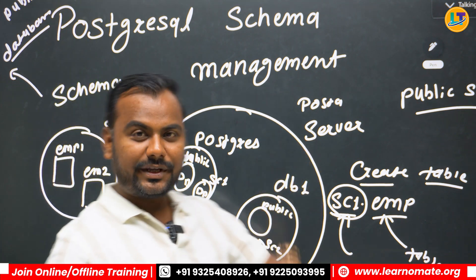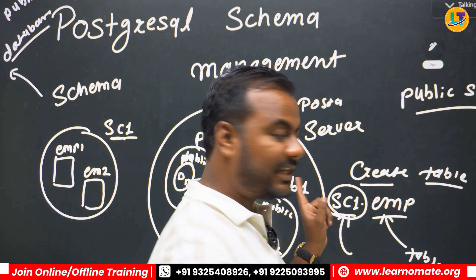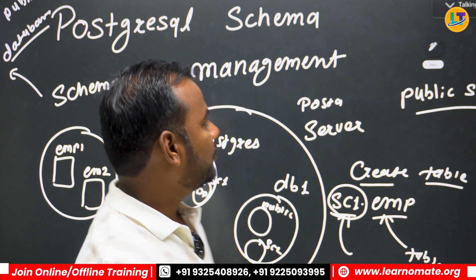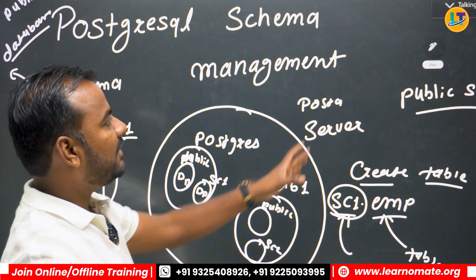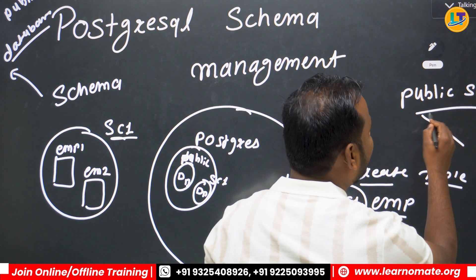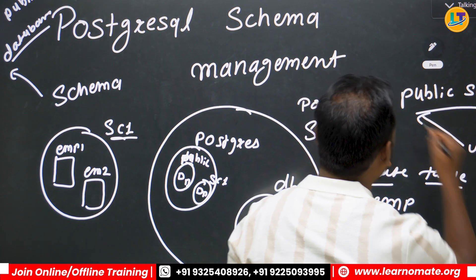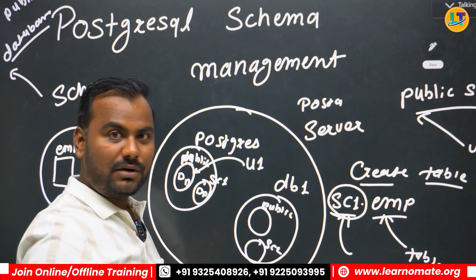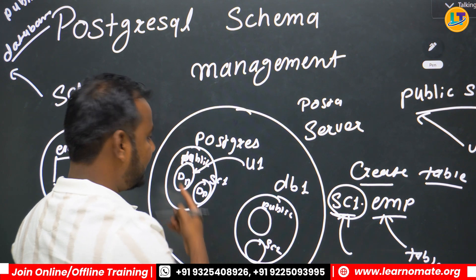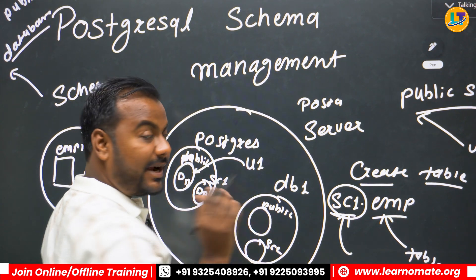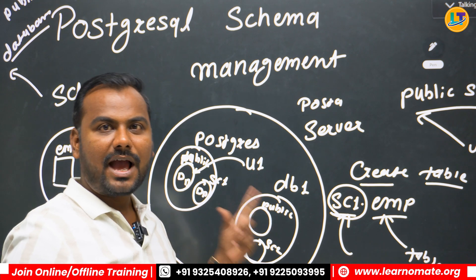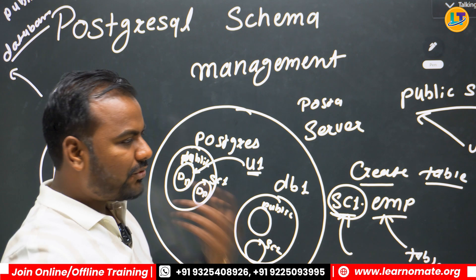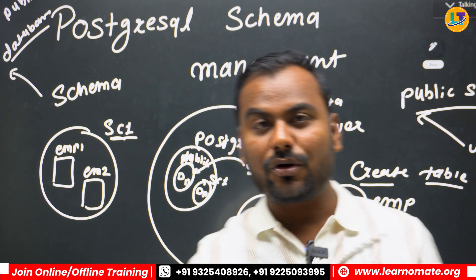Whenever you want to create a table you need to specify a schema name. If you don't specify a schema name, the default is the public schema. Any objects available under the public schema are accessible by all users. For example, if I created a user u1, that user can access the public schema objects by default — public tables are accessible by all users.